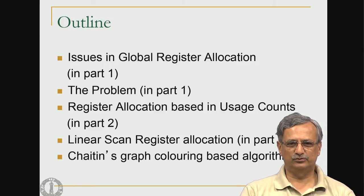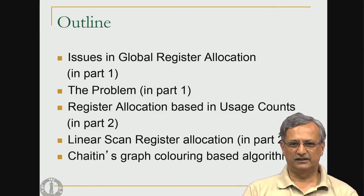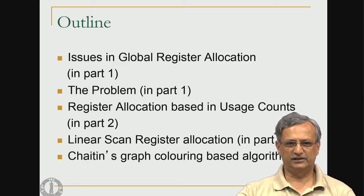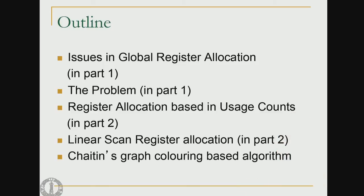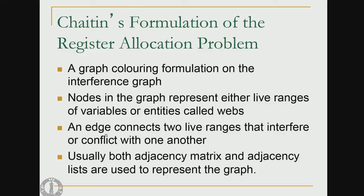Today we are going to discuss the graph coloring algorithm due to Chaitin. This is probably the most complicated and most efficient register allocation scheme that is possible for programs. The formulation of the problem is based on graph coloring, and the underlying graph is known as the interference graph.